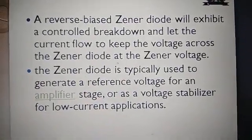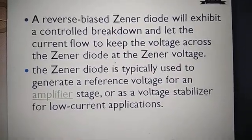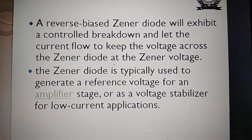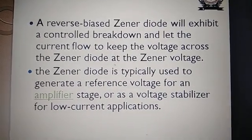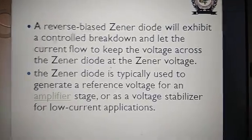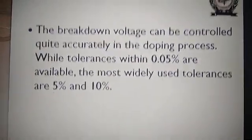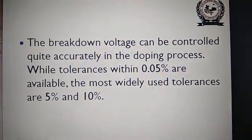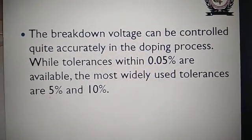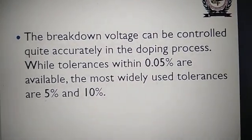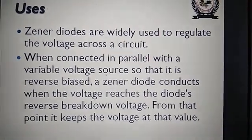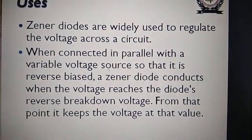The Zener diode is physically used to generate a reference voltage for an amplifier stage or as a voltage stabilizer for low current applications. These are used for reference voltages in regulators like the 723 regulator. For example, a 7.2V Zener diode is used as a reference of DC 7.2V. The breakdown voltage can be controlled accurately in the doping process, with tolerances within 0.05% available; the most widely used tolerances are 5% and 10%.